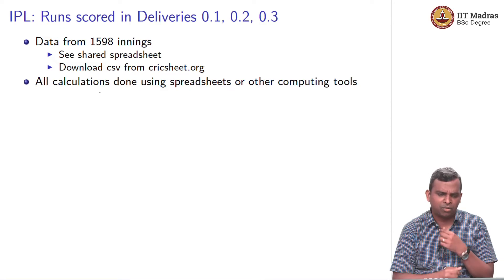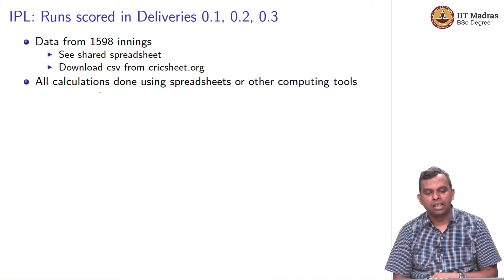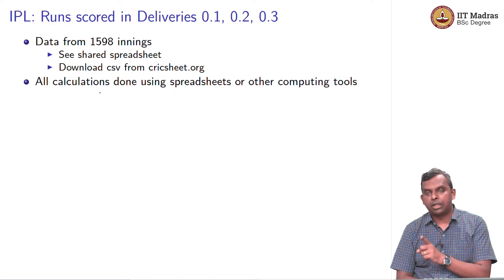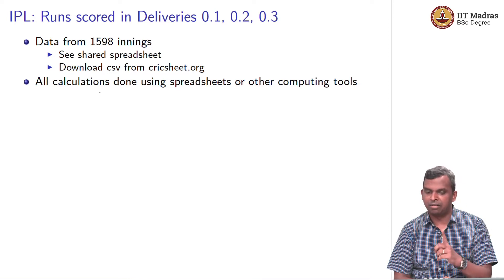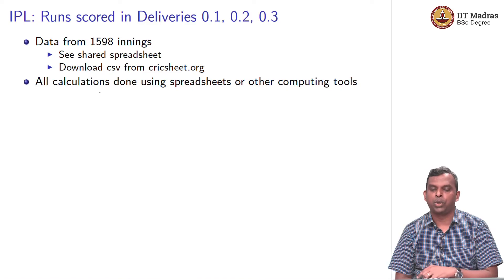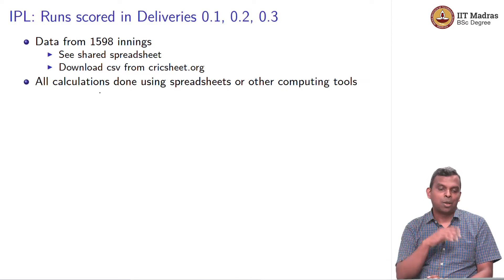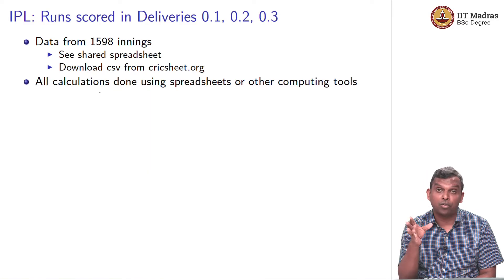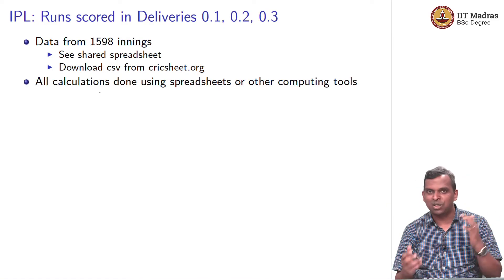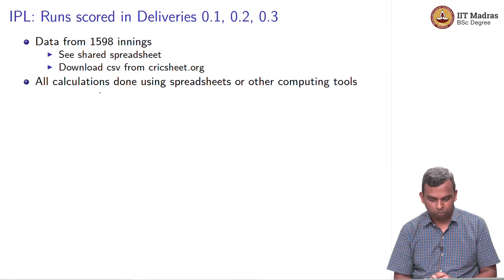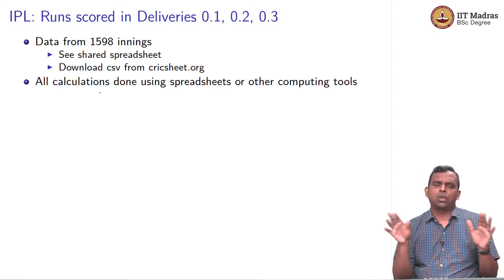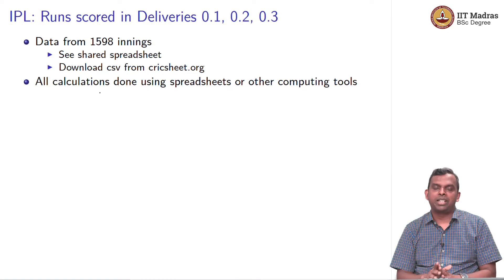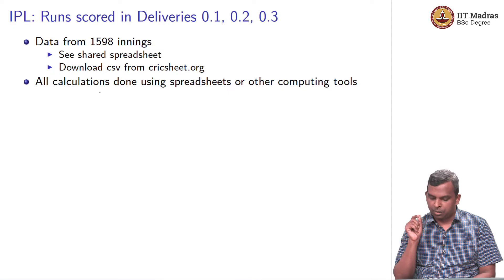Let us come to one more piece of data. I am going to look at the IPL and then in particular I am going to look at runs scored in the deliveries 0.1, 0.2, 0.3. You know what 0.1 is, first over first delivery, first over second delivery, first over third delivery, that is 0.1, 0.2, 0.3. I have data from 1598 innings of past IPL matches. There is a shared spreadsheet in which this data is there. It turns out cricksheet.org now puts out the data in CSV format also. Now cricksheet does that automatically for you. You can go look up the CSV data itself. 1598 is a lot of data. You cannot be writing it down in pen and paper. You need a good spreadsheet program or any other program into which you pull this data and do the calculations by computer.